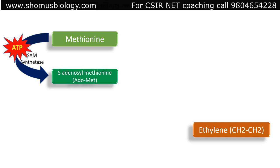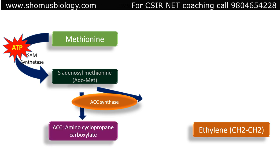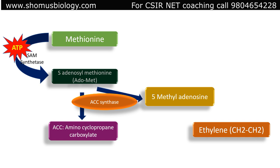S-adenosyl methionine is then converted into two different forms by the enzyme ACC synthase. ACC synthase can convert SAM into ACC (aminocyclopropane carboxylate) or into 5-methyladenosine. The ACC is then converted into ethylene by the enzyme ACC oxidase, which takes oxygen and oxidizes aminocyclopropane carboxylate.